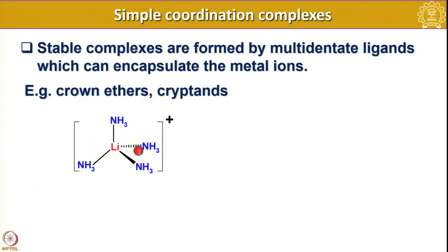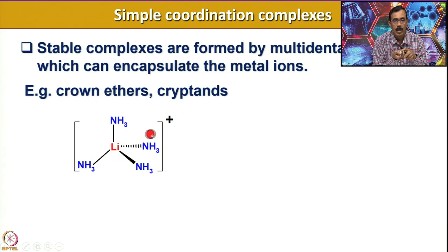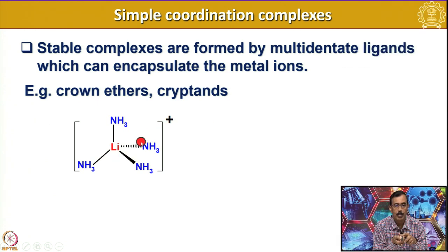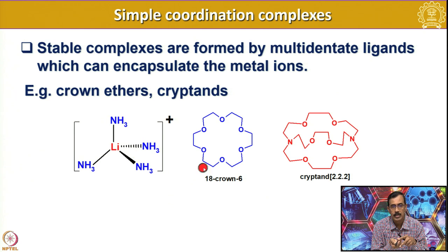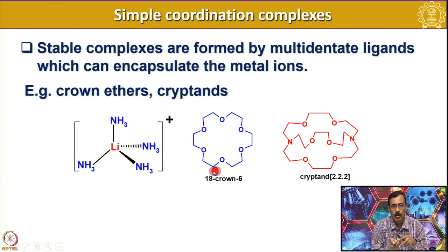For example, lithium can bind to ammonia very similar to any transition metal giving a cationic complex. Nevertheless, if lithium is a counter cation it is advisable to use crown ethers to stabilize this cation rather than going for monodentate ligands, as they are susceptible to further reaction. This is called 18-crown-6: we have 18 atoms in the ring and 6 oxygen atoms, which is why it is called 18-crown-6.